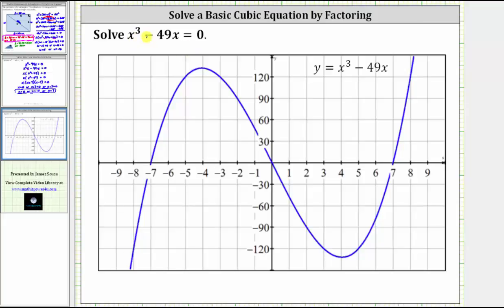if we're given the equation x cubed minus 49x equals zero, we graph the equation or the function y, or f of x, equals x cubed minus 49x.